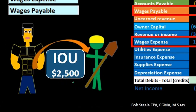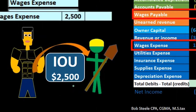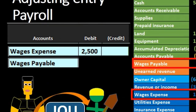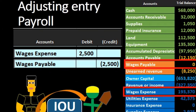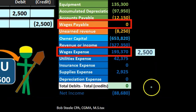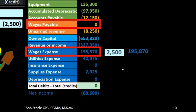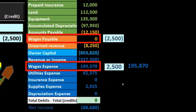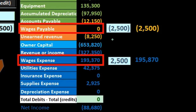In this problem, the amount is given as $2,500, so we debit wages expense for $2,500 and credit wages payable for $2,500. Posting that out, wages expense goes from $193,370 up by $2,500 to $195,870. Wages payable, a liability, goes from zero up in the credit direction by $2,500 to $2,500.